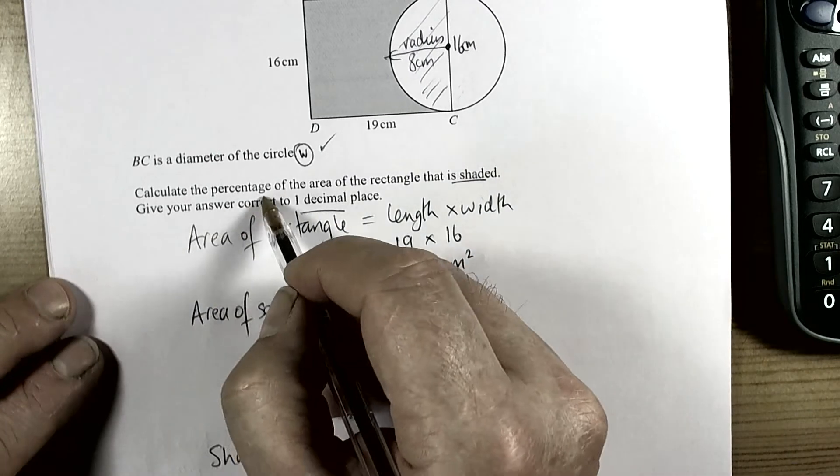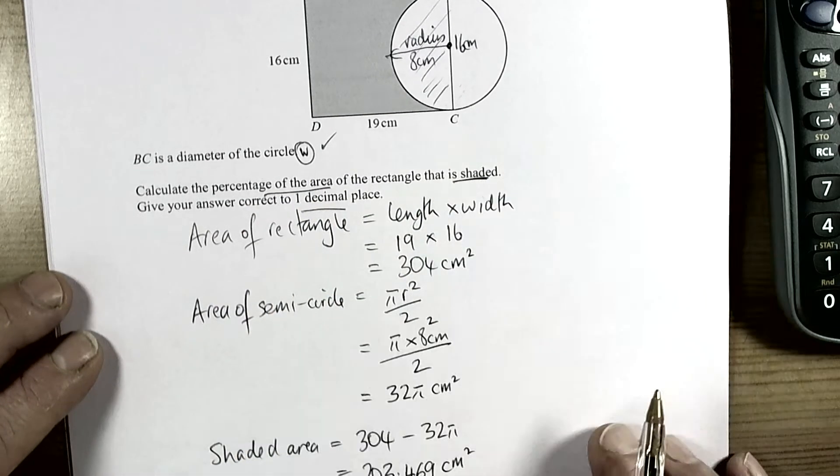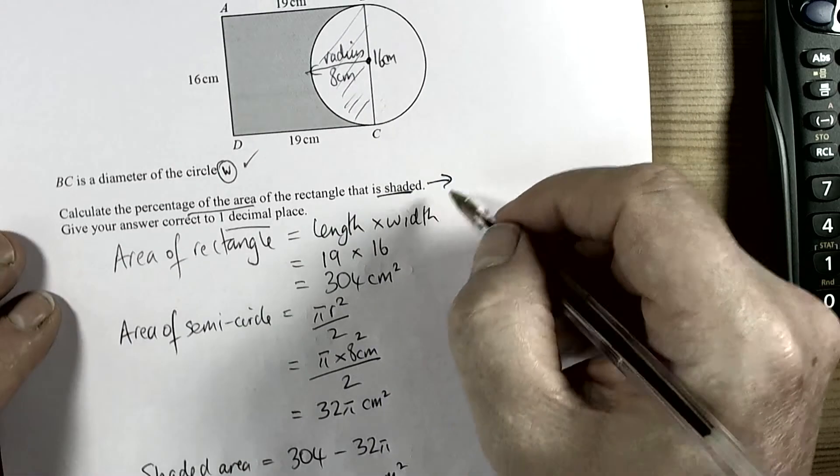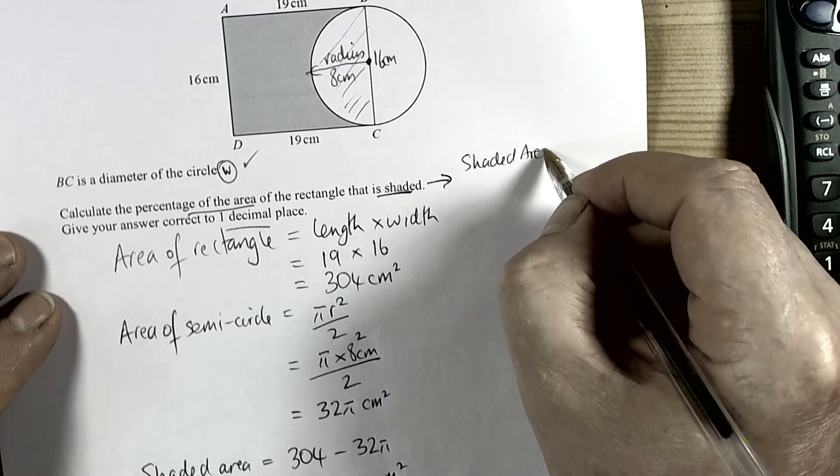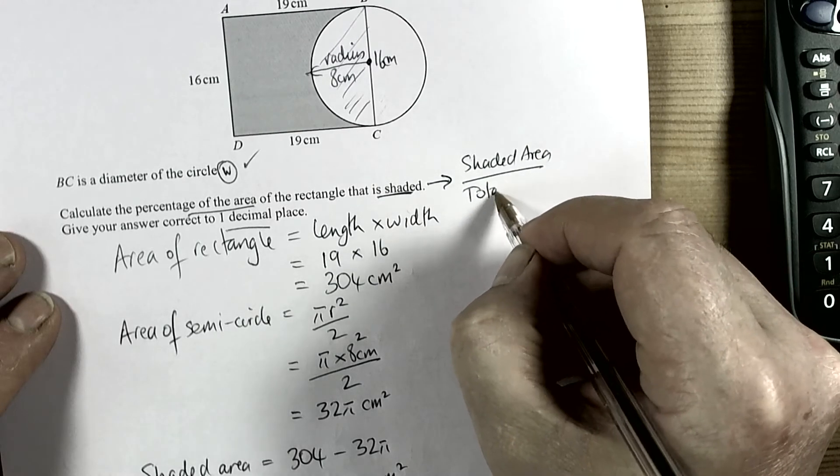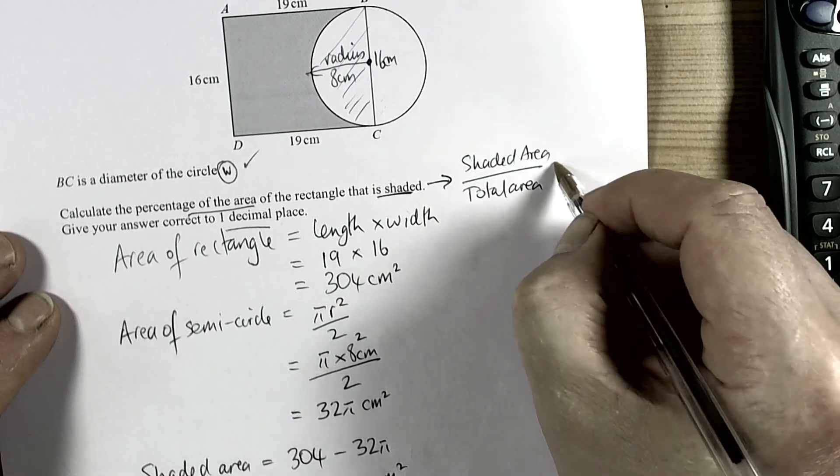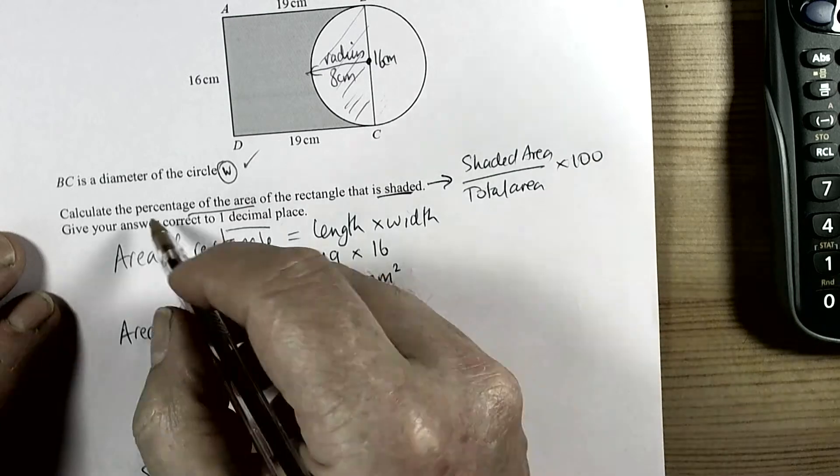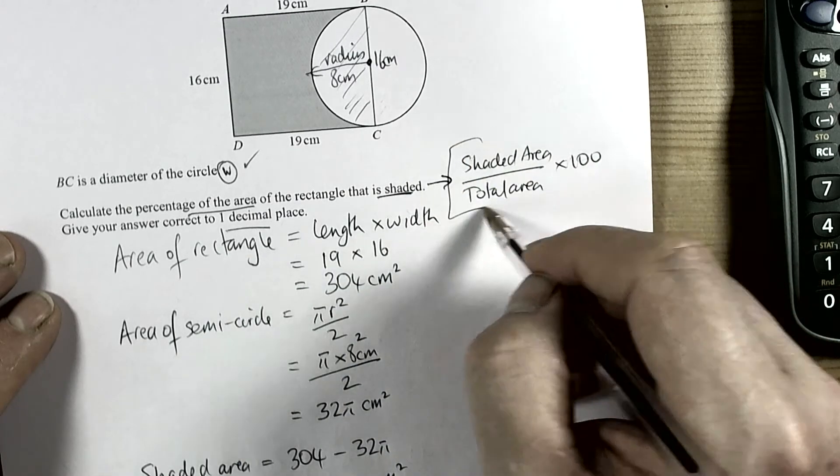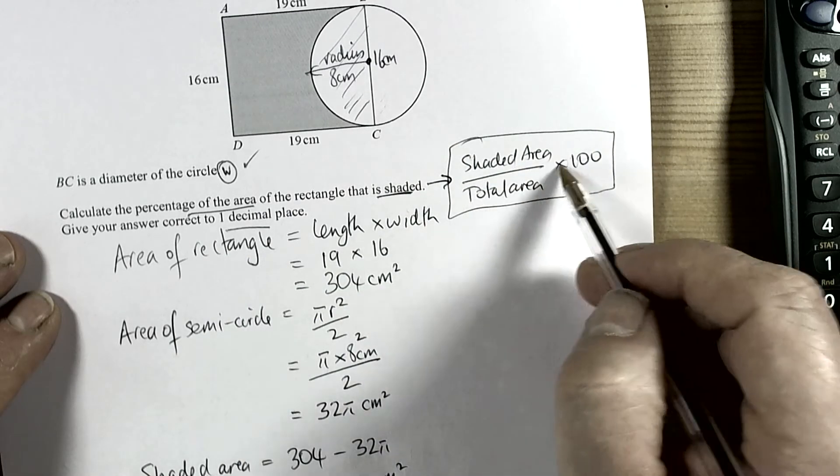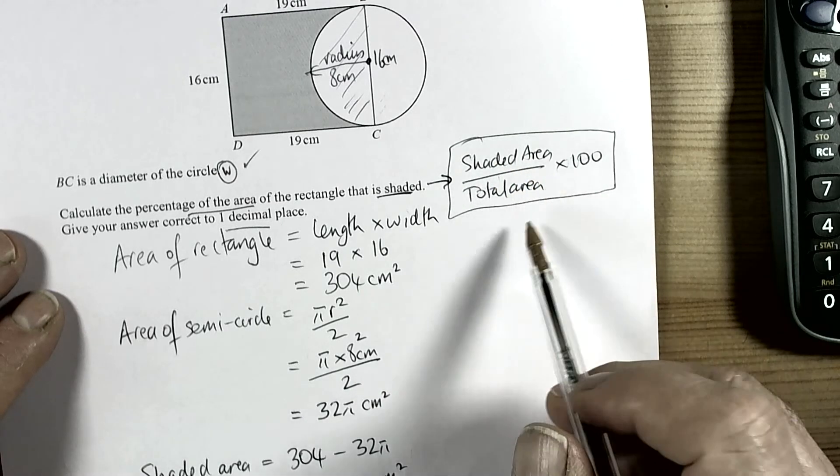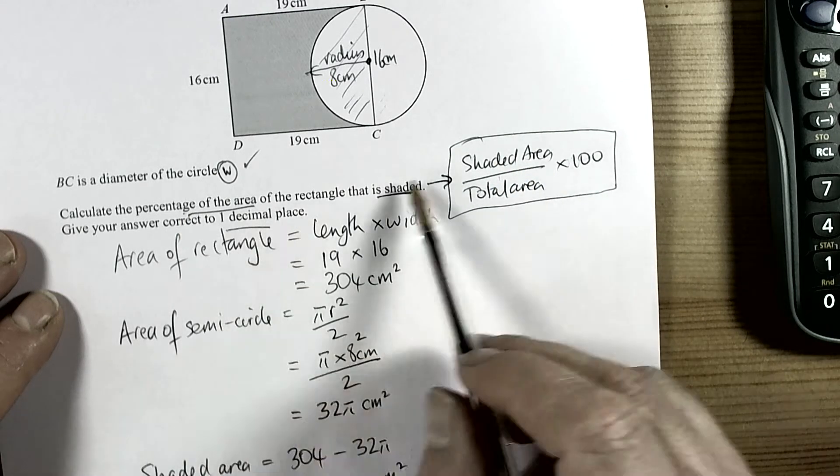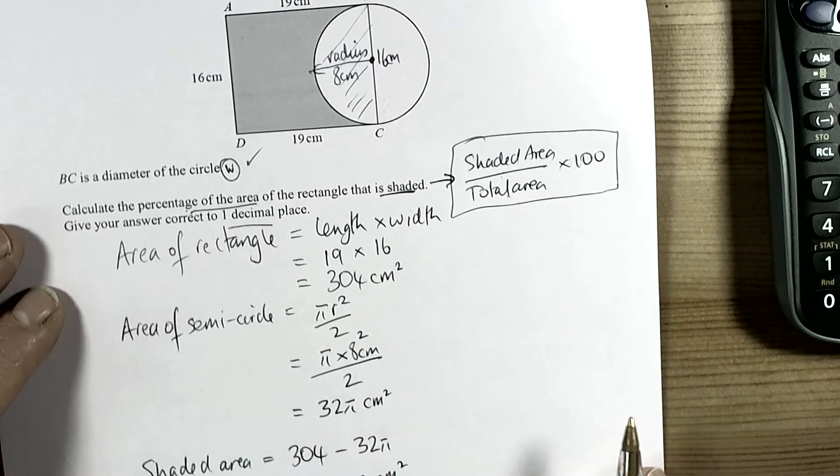And it wants the percentage, so it says calculate the percentage of the area of the rectangle that is shaded. So basically this means we need the shaded area over the total area times 100. When you want an answer as a percentage, then it's always about a fraction times 100, and you've got to decide what the parts of the fraction are. It's about shaded area, so shaded area over the total area.